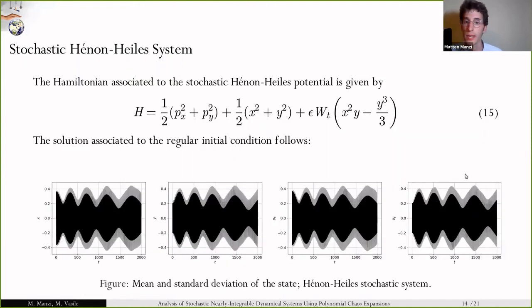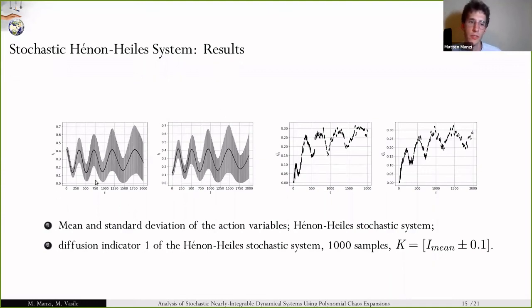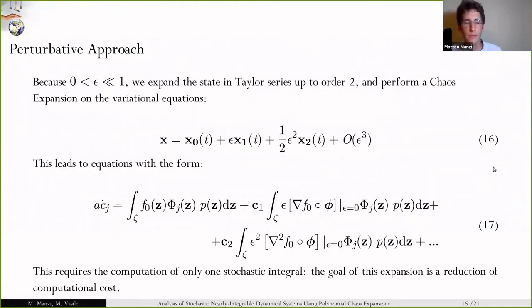After that, we discuss the stochastic Hénon-Heiles potential, in which we introduce the stochastic process inside the dynamics. We can compute the action variables, in which you can see the clear probabilistic diffusion of the action components, which has been numerically assessed with the computation of indicator one. You see that together with the oscillation, the probability for the action to be outside the defined region increases with time. Another ingredient we use is the fact that epsilon is much smaller than one, allowing to expand in Taylor series the state of the system, and then again making use of chaos expansion.